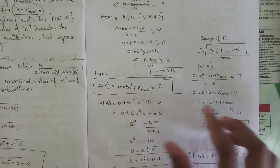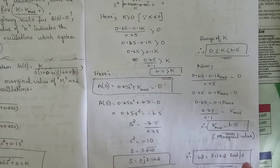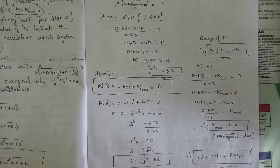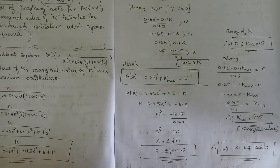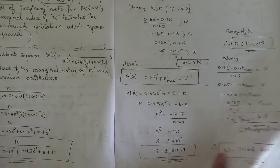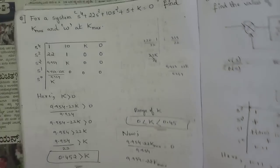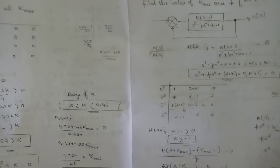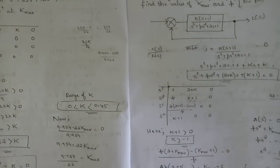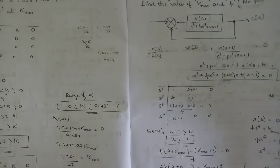Problems related to the range of K, finding the marginal value K-margin, and substituting back in the auxiliary equation for the row of zeros to find the frequency of sustained oscillations — these kinds of problems have been solved in our model paper solutions and playlist. We have solved many different kinds of Routh array problems, all of different types, so you should be very thorough with them.